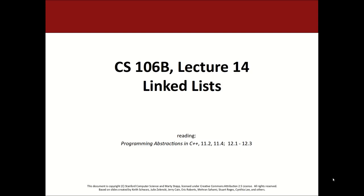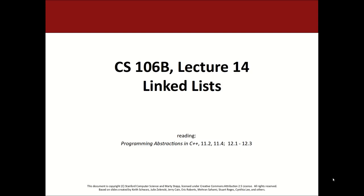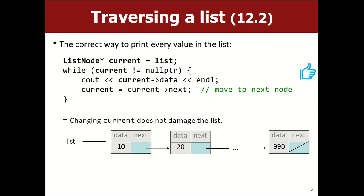Quick recap: we wrote nodes, we have pointers that pointed to each other, we chained them together to make a linked list, and we wrote code that could walk across a linked list to traverse it and examine or print all the elements. The key concept from last time was that you often need to make a temporary variable — I often call it 'current' — because it represents the current node I'm looking at right now.